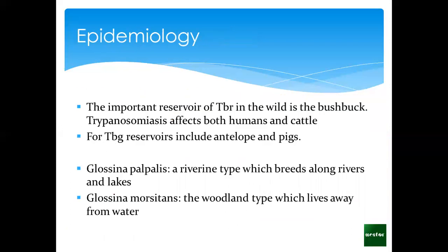Looking at the pattern and causation of this disease: the reservoir for Trypanosoma brucei rhodesiense is mostly found in bushbuck — animals that almost look like antelopes but have long horns. Trypanosomiasis affects both humans and cattle. For gambiense, the reservoirs include antelopes and pigs. These reservoirs can also cross over to human beings. Glossina palpalis is a riverine type, which breeds along rivers and lakes.